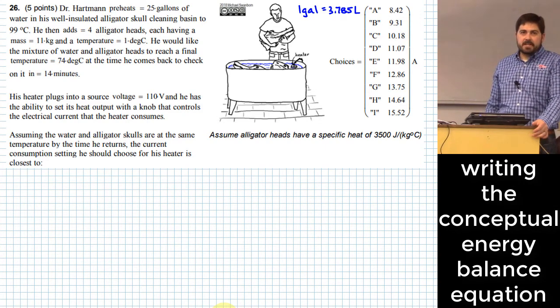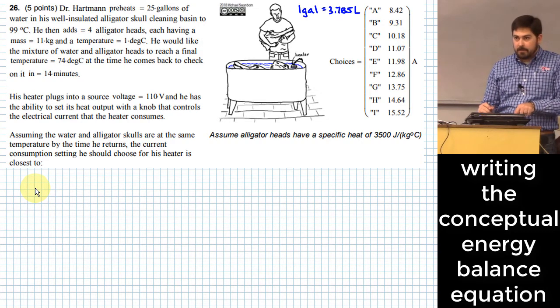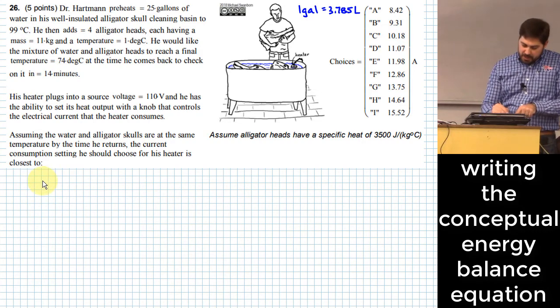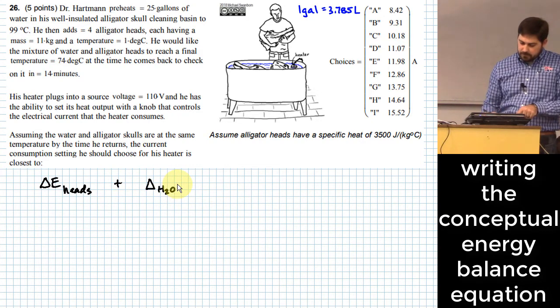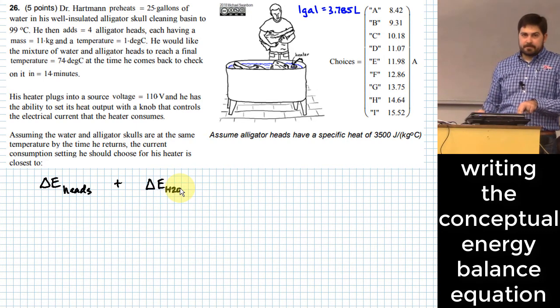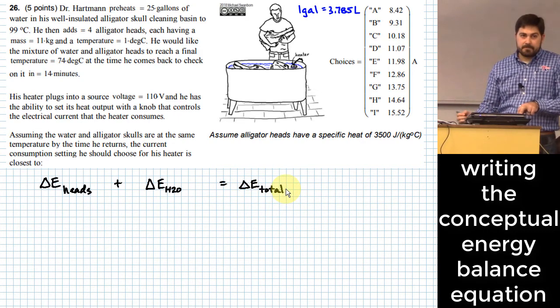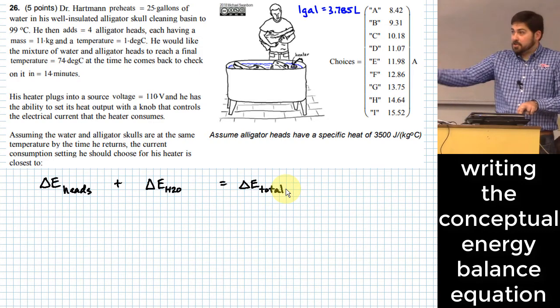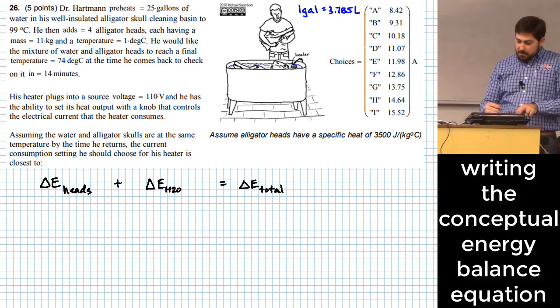All right. What's the basic idea? What's the big picture of this question? We are looking for current, right? But the big picture is that we have a change in internal energy of the heads, plus the change in internal energy of the water. What should this be equal to? The total energy change. And why is there a total energy change? Because we're adding energy from the heater. So all we got to do is fill in the details. That's the big picture.